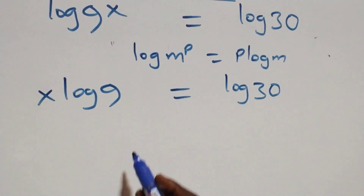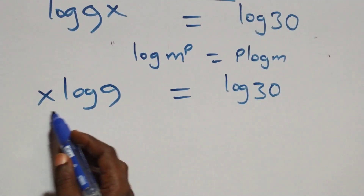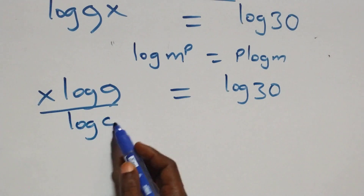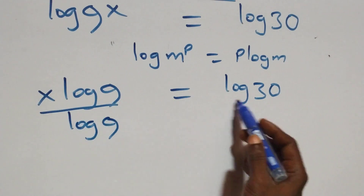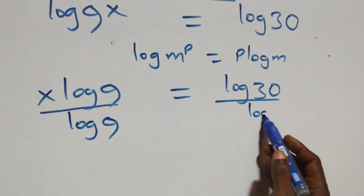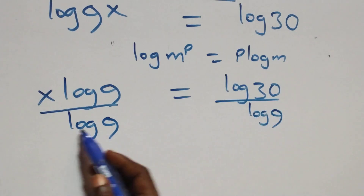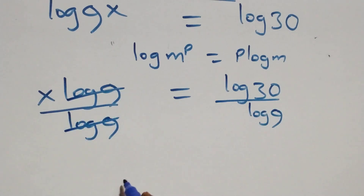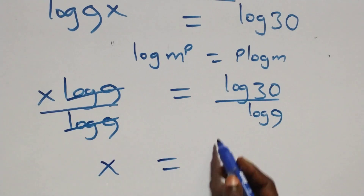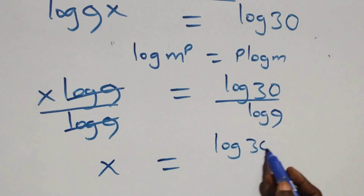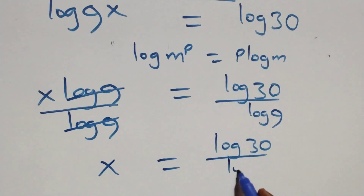The next step, we divide both sides by log 9 — divide this side by log 9, also divide this side by log 9. This implies log 9 cancels each other, and we have x equals to log 30 over log 9.